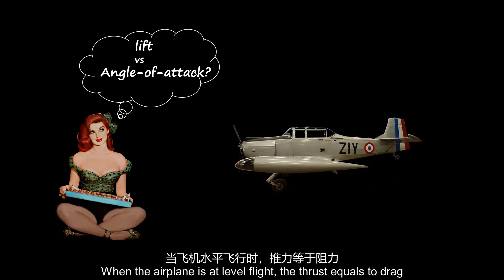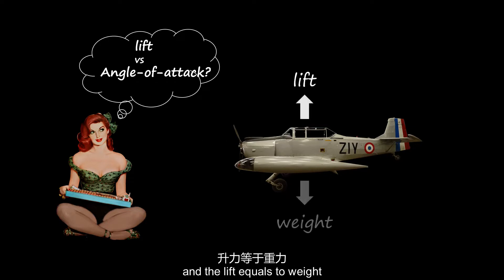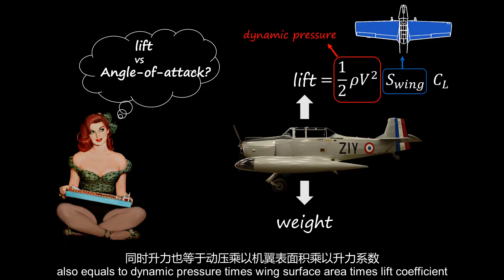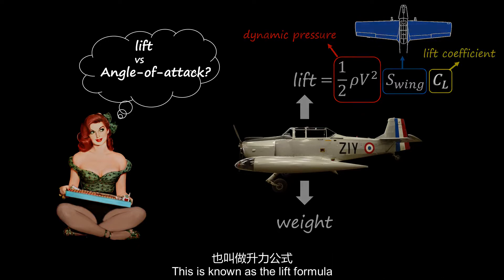When an airplane is at level flight, the thrust equals the drag and the lift equals the weight, which also equals the dynamic pressure times wing surface area times lift coefficient. This is known as the lift formula.